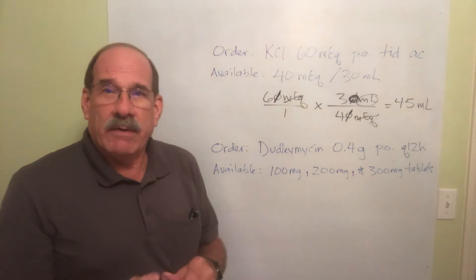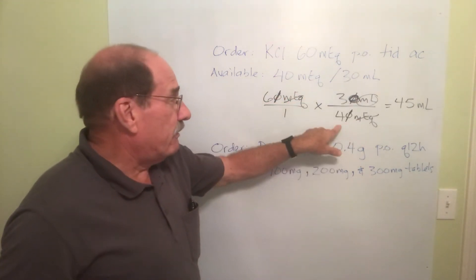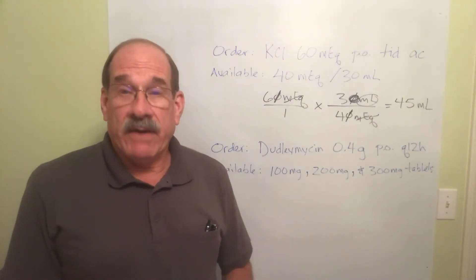Well then what do I have? 6 times 30 divided by 4. Either way, no matter which way I do it, I get the answer of 45 milliliters.